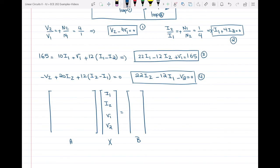Equation 1, I have V2 minus 4V1. So I don't have any I1, I don't have any I2, I have minus 4V1 and 1V2 is equal to zero. Equation number 2, I have minus 1I1 plus 4I2 and then I don't have any Vs over here. Equation number 3, I have 22I1 minus 12I2, 1V1 and 0V2 is equal to 165. And then minus 12I1, 22I2, 0 and minus 1 is equal to zero.